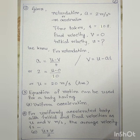Our fourth question: for a uniformly accelerated body with initial and final velocity as U and V meter per second, the average velocity is — the answer is option C — that is, initial velocity plus final velocity by 2, that is U plus V by 2.